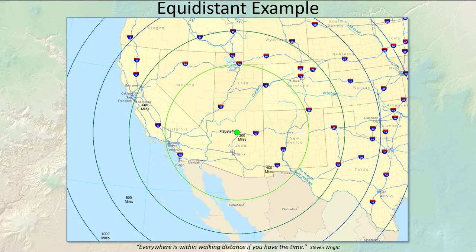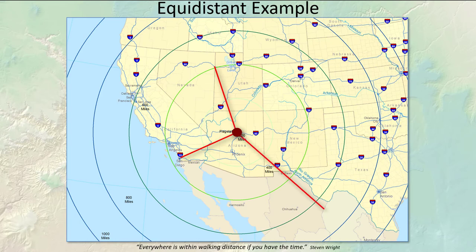Here's an example of an equidistant projection. This projection shows accurate distances to areas around Flagstaff. So I could put a ruler on this map and, as long as one end is hooked on Flagstaff, I could aim it anywhere on the landscape and calculate the correct distance to that point. Equidistant coordinate systems are accurate from a point to other points or along a particular line — there aren't any projections where you can take any two arbitrary points and have the distance be accurate.